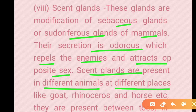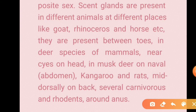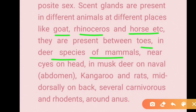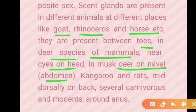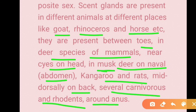For example, in goats, rhinoceroses, and horses, scent glands are found in their toes. In deer species, they are near the sides of the head. In musk deer, they are on the navel. In kangaroos and rats, they are mid-dorsally on the back. In several carnivores and rodents, they are found around the anus.